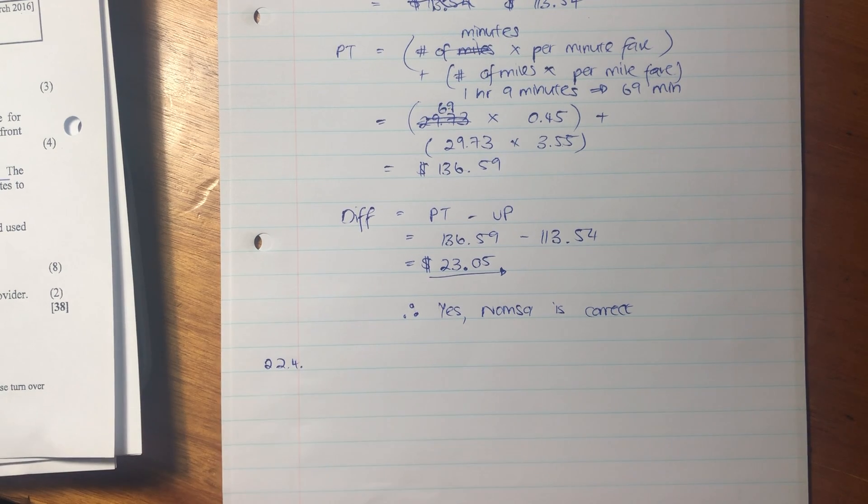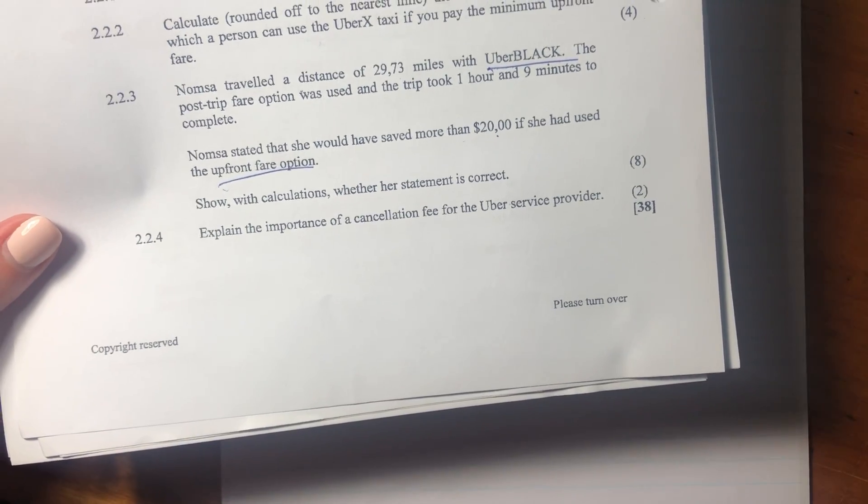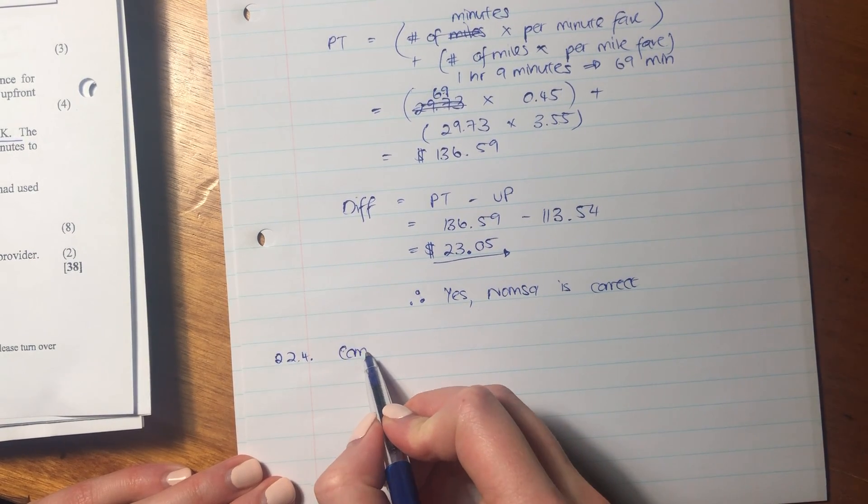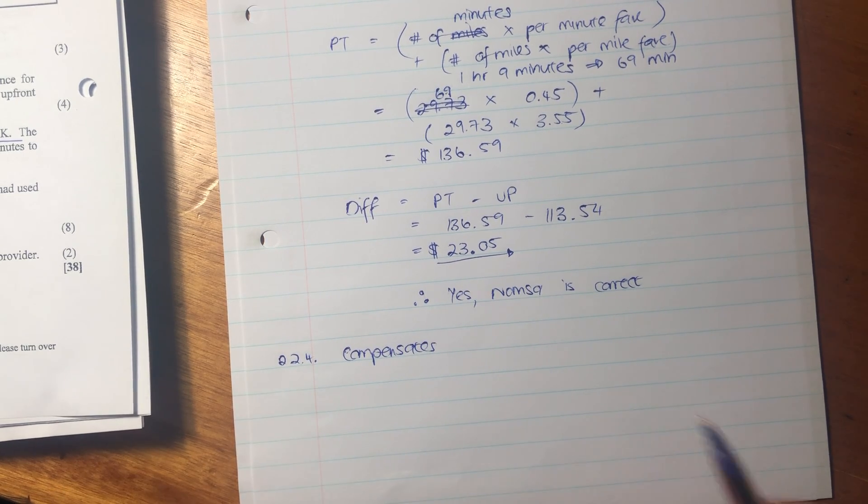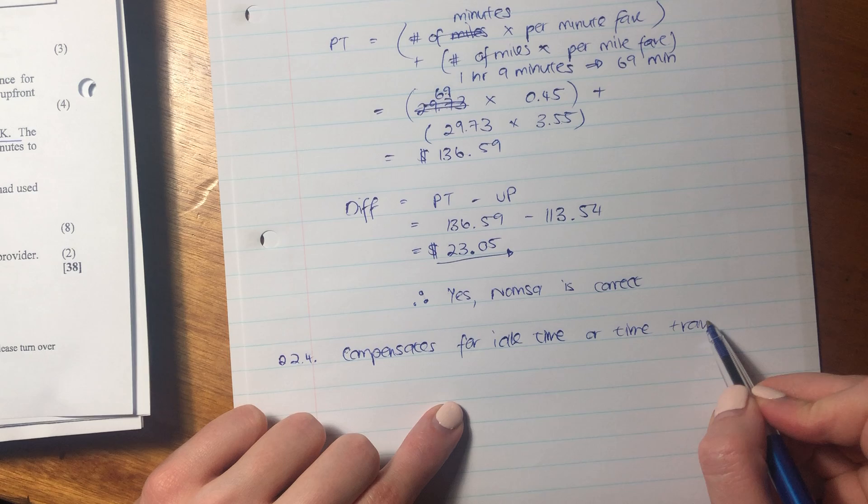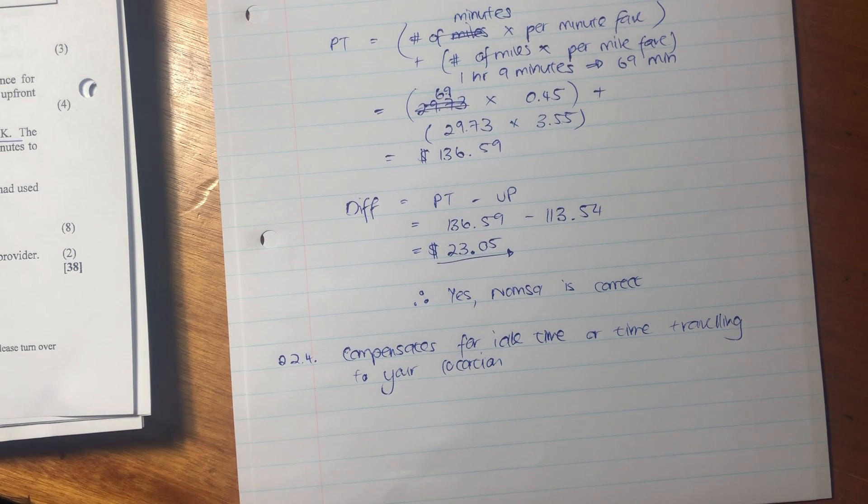Let's now go to the last question of this paper. Now, this is quite interesting because it's one of these practical questions. It says, explain the importance of a cancellation fee for the Uber service provider. So it's basically saying, why is it important? Well, it compensates. So you could be saying, what does that mean? Compensates basically means I get paid. So it compensates for idle time or time traveling to your location. That's sort of the main one. So it's basically saying when you order an Uber and then you cancel it and that guy is like outside, he's now spent money and time coming to fetch you. And now if you don't go out, he's now incurred that cost. So that's what that cancellation fee is for. It's also to prevent people from sort of ordering an Uber and then canceling it and then wasting people's time. So you can look in the memo for some further detail there, but these are the main reasons.